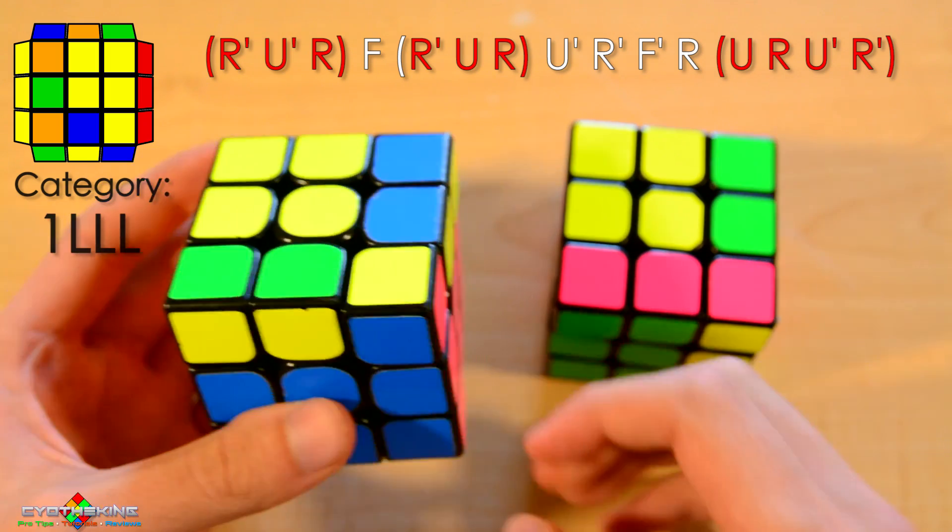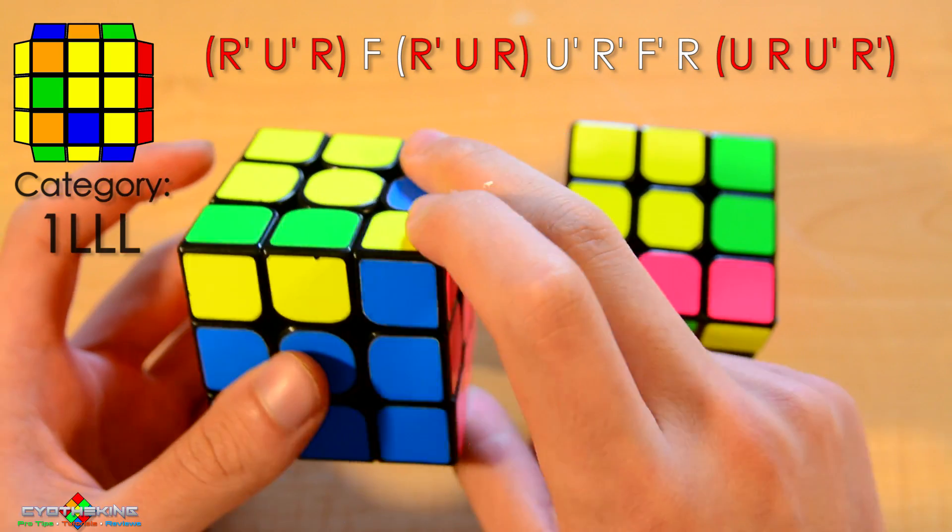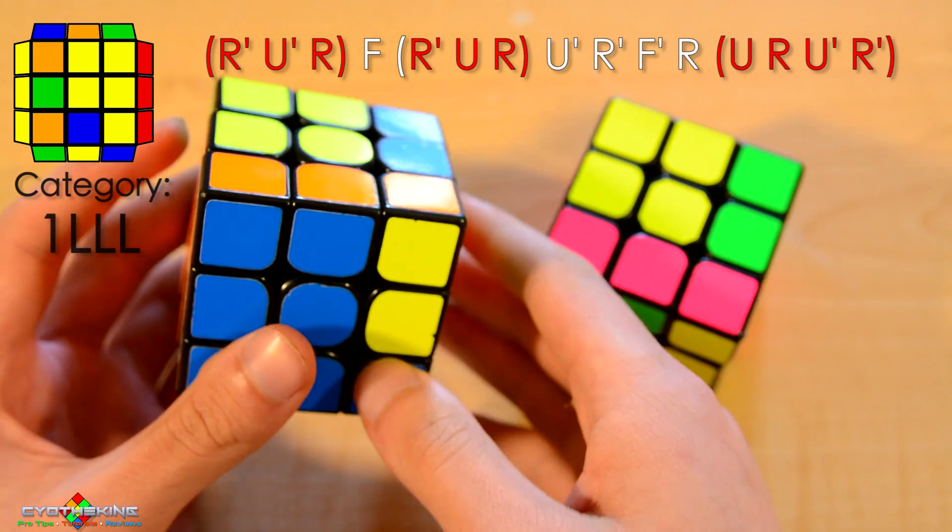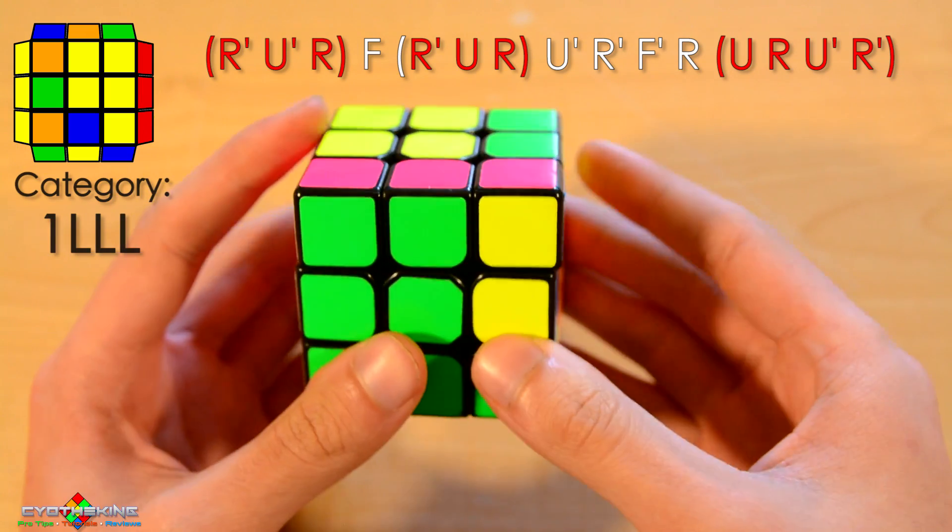And now you're going to cancel into this OLL if you know it. So it's the OLL CP, I should say. So right here the F move is already done. If you know that OLL, it's just canceling into that.